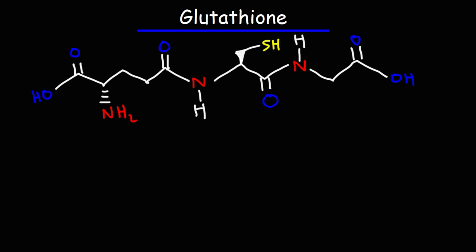It is a polypeptide composed of three amino acids and those amino acids are glutamic acid, cysteine, and glycine. If you focus on the amide functional groups, that's where you'll find where the amino acids were condensed to form glutathione.